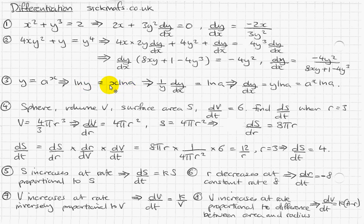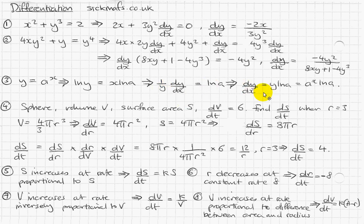Then differentiate both sides implicitly. The differential of ln(y) is 1/y · dy/dx. The right-hand side is x times ln(a), where ln(a) is just a number, so differentiating gives ln(a). Moving the y to the other side — it becomes multiply by y — so dy/dx equals y · ln(a). And since we said y = aˣ at the start, dy/dx = aˣ · ln(a). That's the derivation of the differential of aˣ, which equals aˣ · ln(a). A can be any number and x is the power.